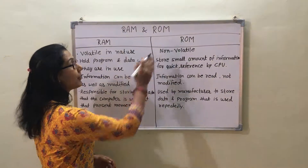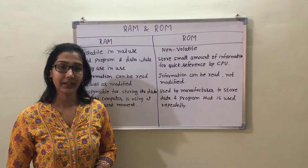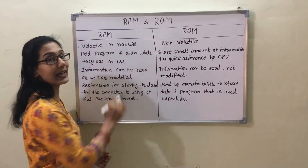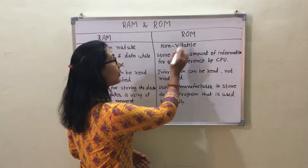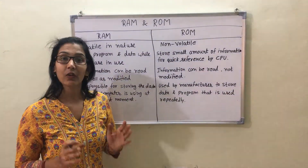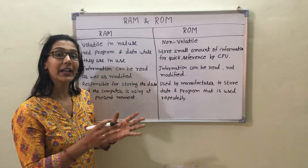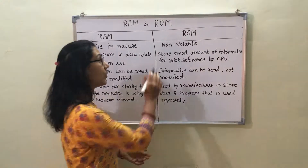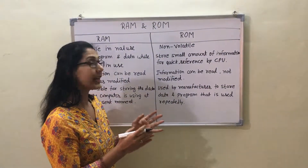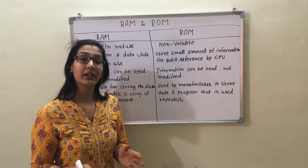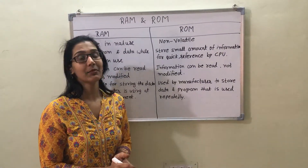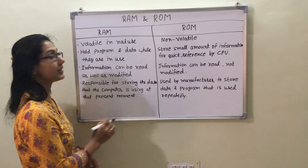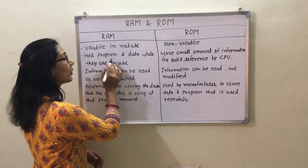Now this is the comparison of RAM and ROM for better understanding. The first point is RAM is volatile in nature while ROM is non-volatile. Volatile means all data will be lost when the power is off, and non-volatile means all data stored in ROM will remain the same after the power is off.